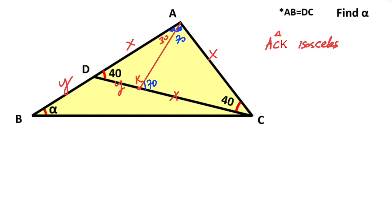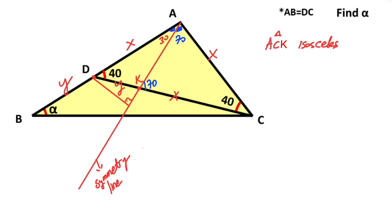Notice that there are 30 degrees here. Therefore, if we mirror triangle ADK over line AK, we get an equilateral triangle. If we take the symmetry of triangle ADK with respect to this line and draw the perpendicular, these two parts must be equal because of symmetry. Let's call this point T.